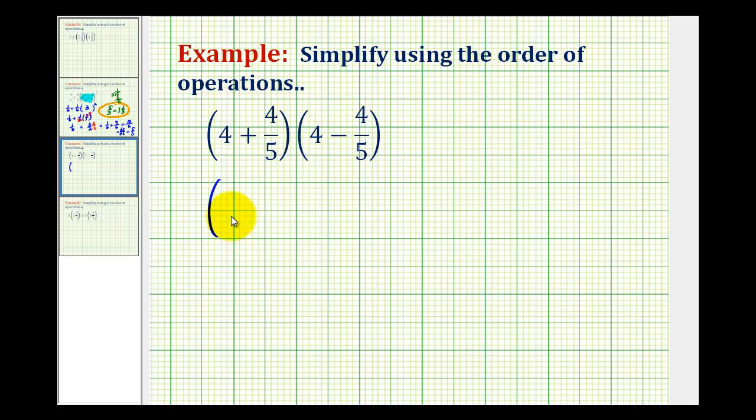Well, 4 plus 4 fifths would be 4 and 4 fifths, and here we have 4 minus 4 fifths. Let's take a look at this difference over here on the side.